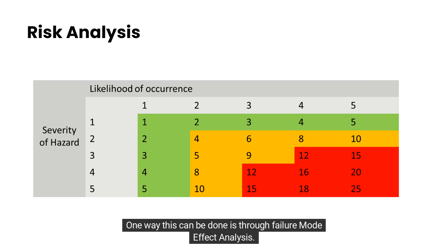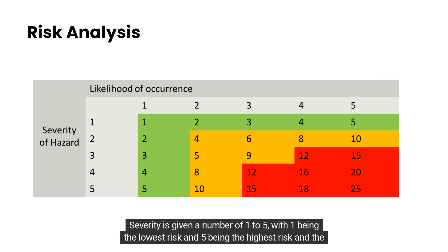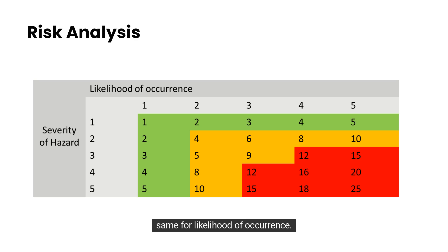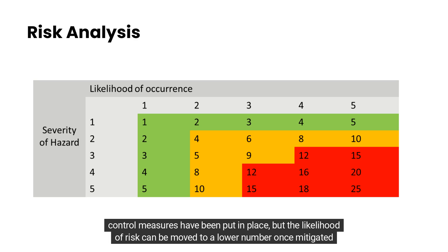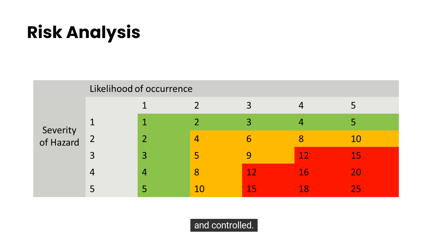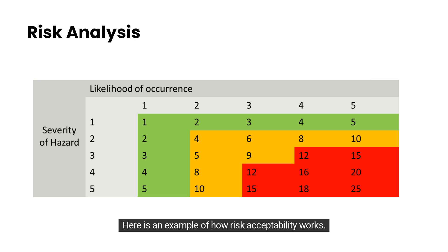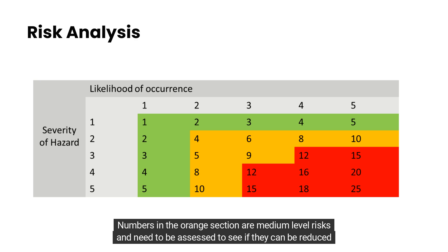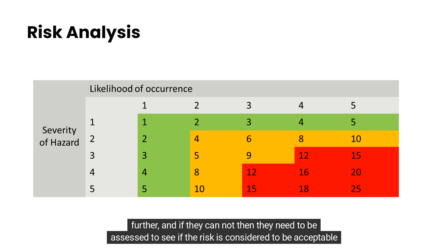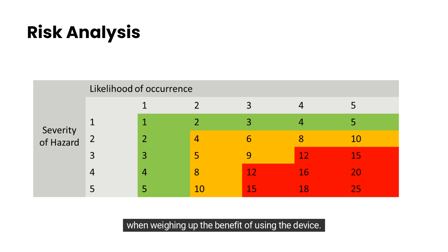One way this can be done is through failure mode effect analysis. Severity is given a number of 1 to 5, with 1 being the lowest risk and 5 being the highest, and the same for likelihood of occurrence. It is important to remember that the severity of the identified risk will always be the same even after control measures have been put in place, but the likelihood of risk can be moved to a lower number once mitigated and controlled. The numbers in the green section are generally considered to be acceptable risks and have been reduced to as low as possible. Numbers in the orange section are medium level risks and need to be assessed to see if they can be reduced further, and if they cannot, they need to be assessed to see if the risk is considered acceptable when weighing up the benefit of using the device.